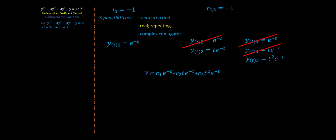For the third solution, it's going to have the same setup, but again we're running into a repeating scenario. We need to add another t, but that looks like the second solution, so we can't use that either. All we have to do is add yet another t, and our third solution is t squared e to the negative t. We can now write up our homogeneous solution — the three solutions summed with constants c1, c2, and c3.